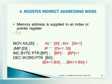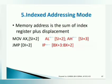In register indirect mode, the register does not contain the data — it contains the address of the data. By using that address we are able to access the data. Since we are using an indirect process to access the data, it is said to be register indirect addressing mode.